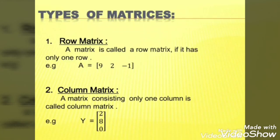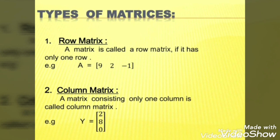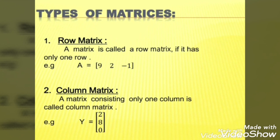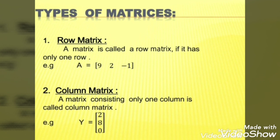Types of matrices. The first type is row matrix. A row matrix is a matrix that has only one row. The number of columns can be 2, 3, 10, 20 — it should have only one row. You can see that matrix A has 1 horizontal line and 3 vertical lines, so the order of matrix A is 1 by 3. Since it has only one row, that matrix is a row matrix.